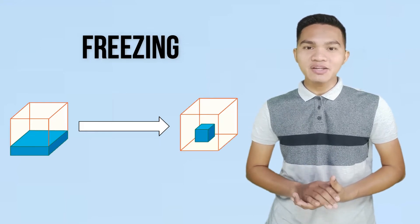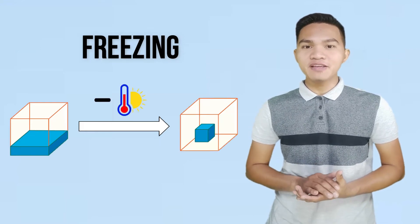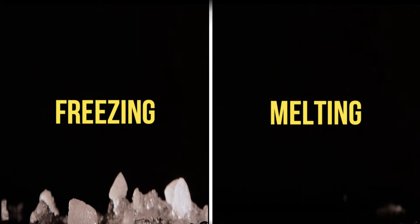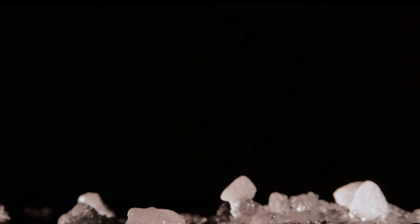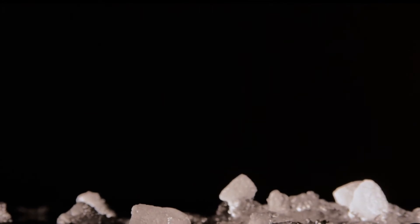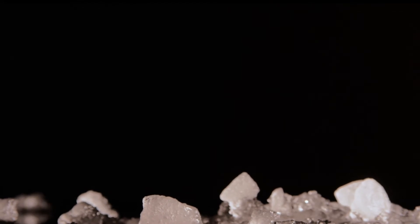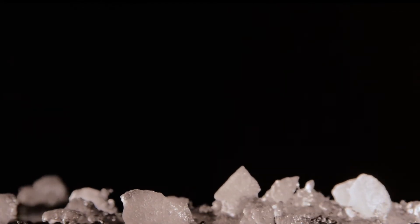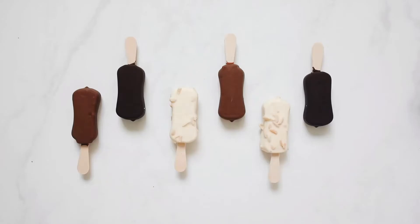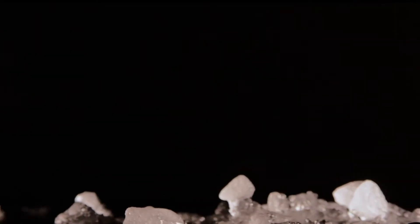Freezing is a change of phase in which a liquid turns into a solid by removing heat. Freezing and melting are the reverse of each other. The temperature at which a liquid changes into solid is the liquid's freezing point. For a liquid to freeze, energy must be removed from the liquid to slow the movement of the particles. Examples include fruit drink poured into a mold to make a popsicle in the freezer, and the freezing of water to form ice.